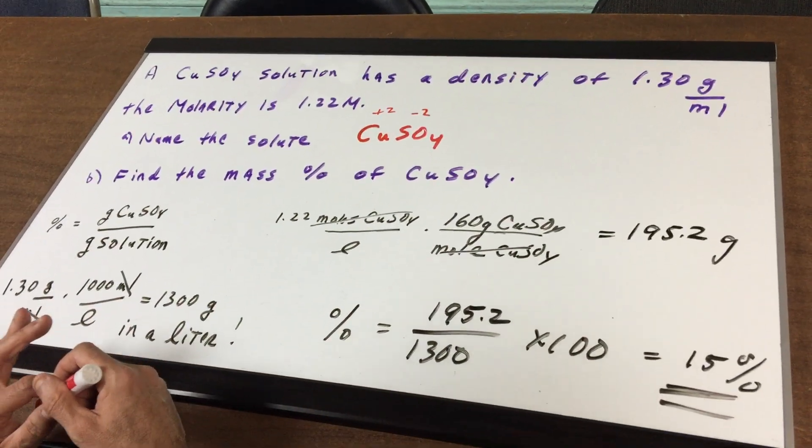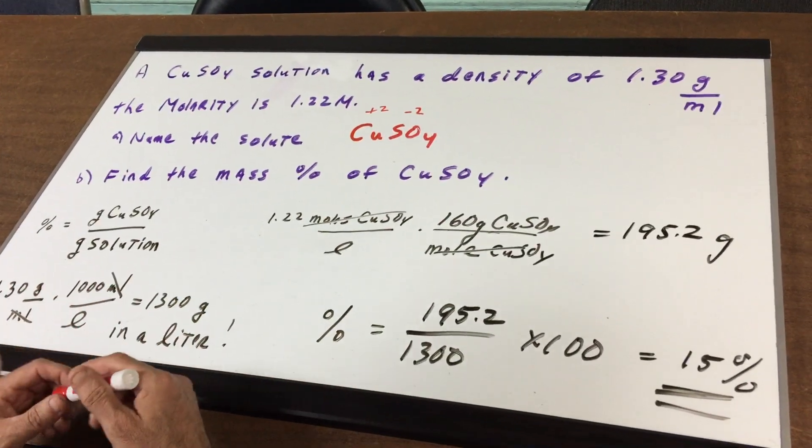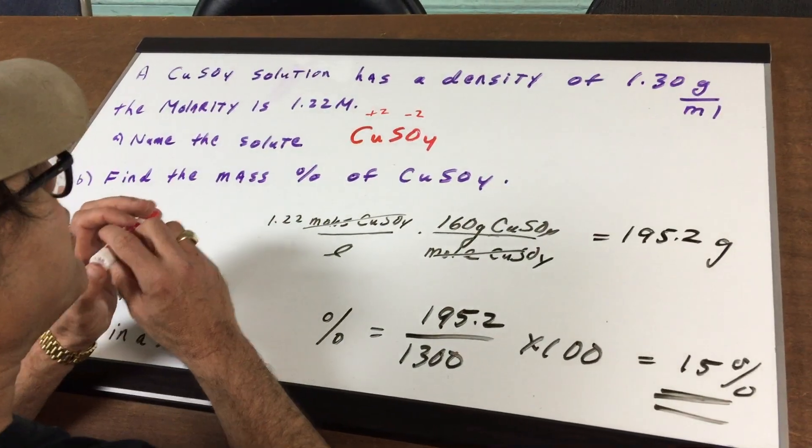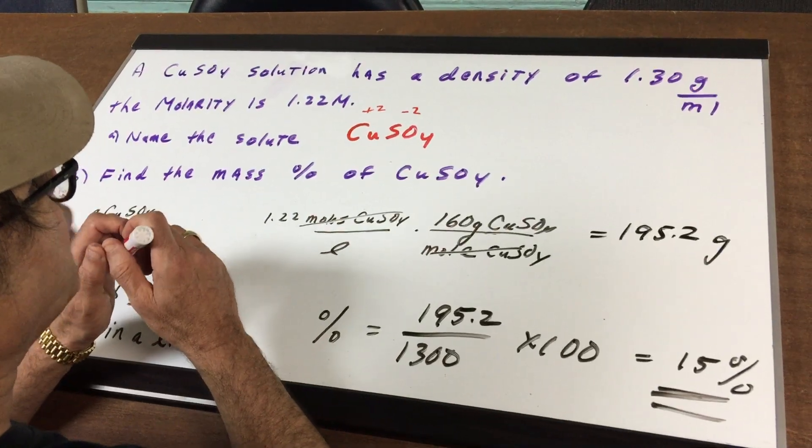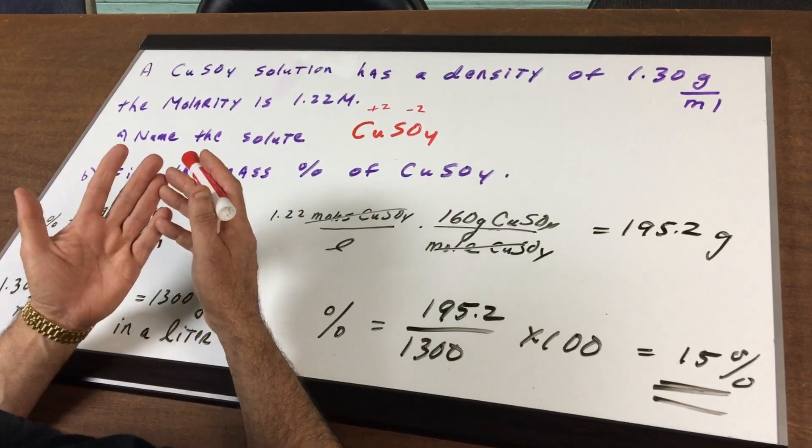Because copper is a transition element, it could have more than one oxidation state. That's something you want to remember for the DAT. If you ever see a transition metal, it often has more than one oxidation state.